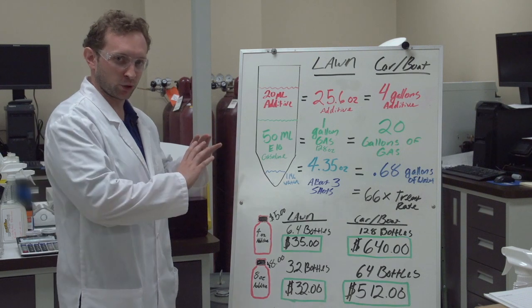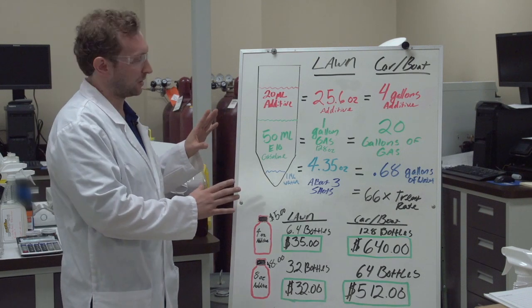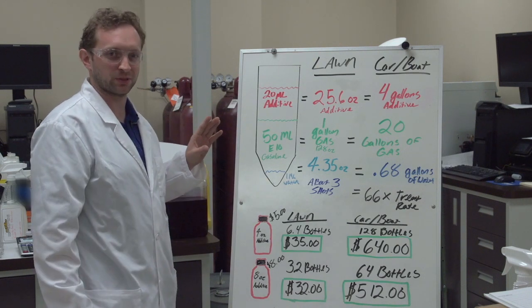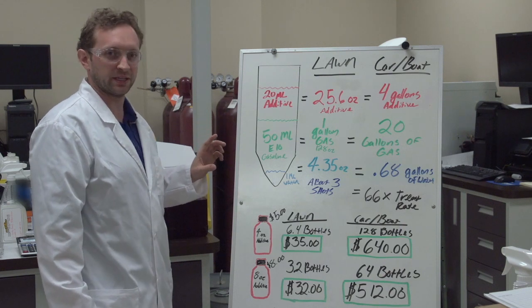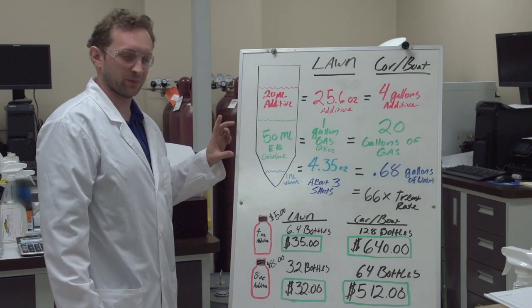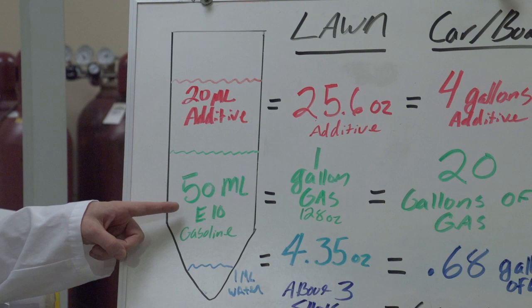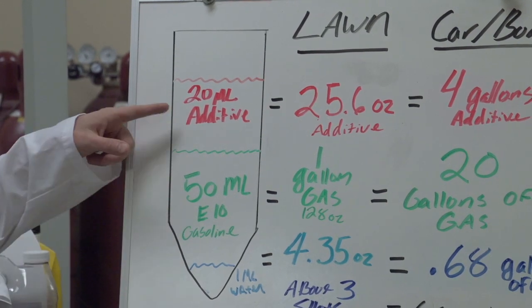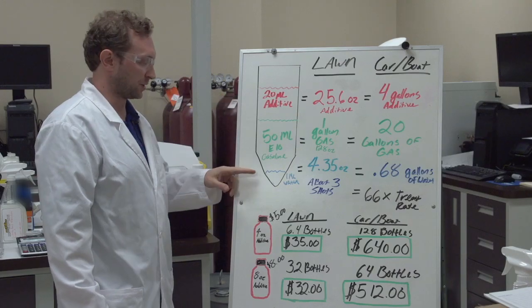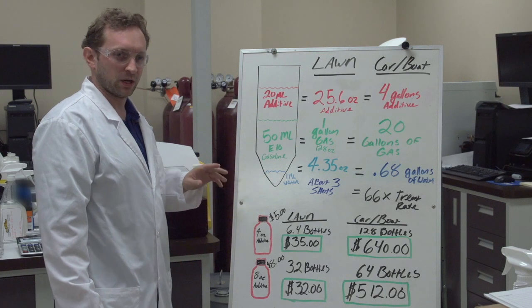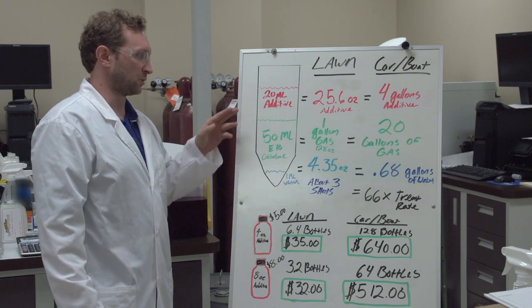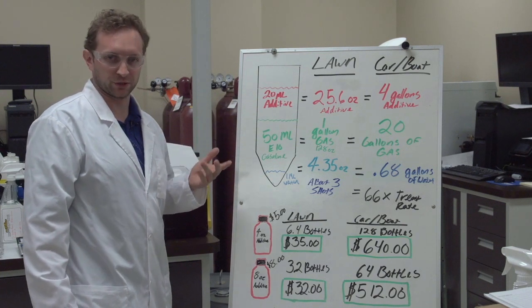Here on the board we have broken down and extrapolated the numbers of what you'll see in common tabletop demos. What you'll typically see is a test tube with about 50 milliliters of gasoline and people will put in about 20 milliliters of additive with about a milliliter of water. And what they'll show you is this 20 milliliters of additive brings up the water into the fuel layer.